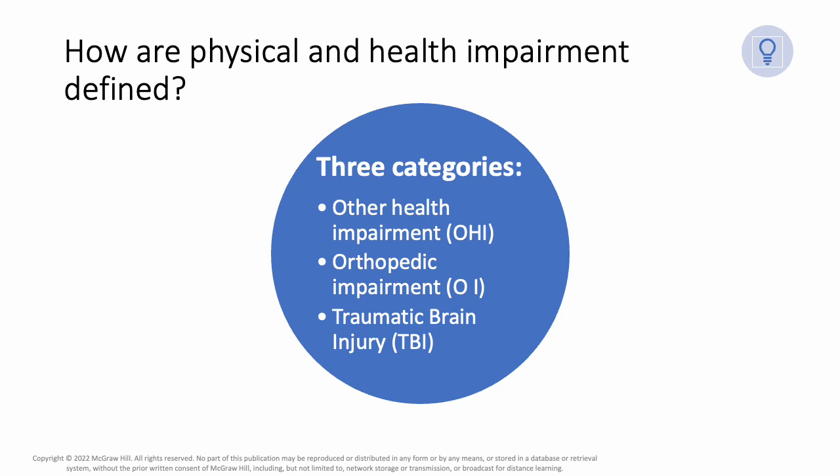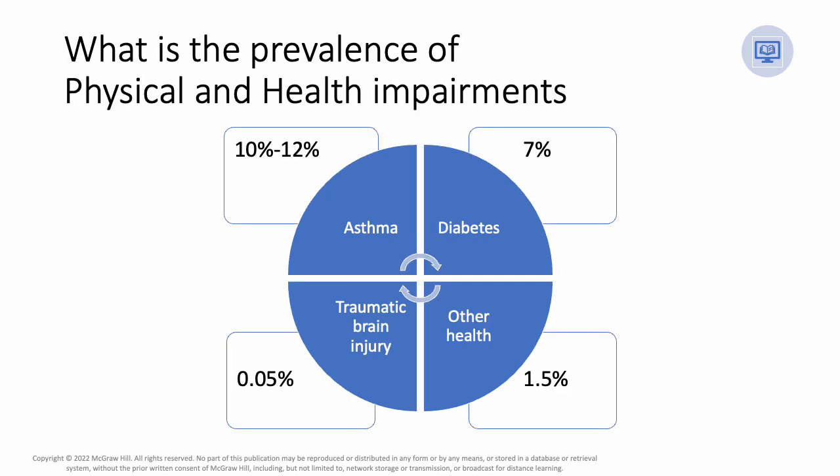Traumatic brain injury, TBI, is an acquired injury to the brain caused by external physical force resulting in total or partial functional ability or psychosocial impairment, or both, that adversely affects educational performance. It includes open or closed head injuries. TBI is often diagnosed as another disability such as a persistent pattern of inattention and/or hyperactivity-impulsivity, ADHD, or a learning disability.